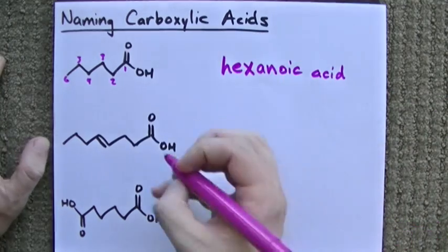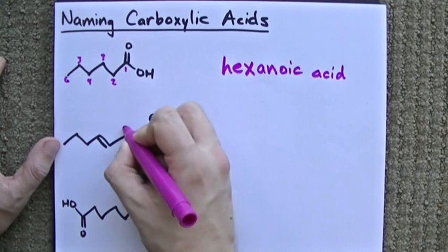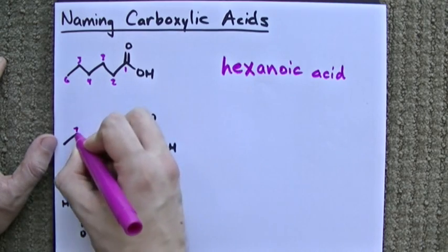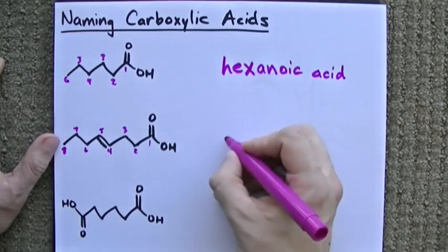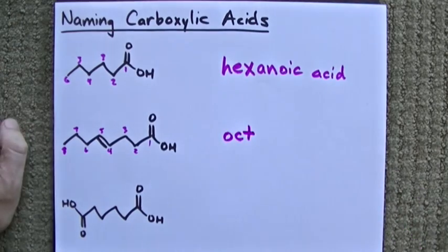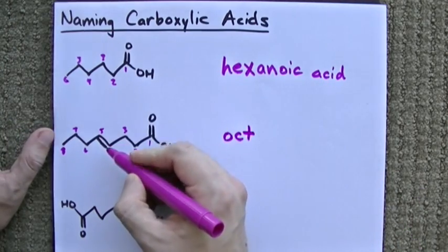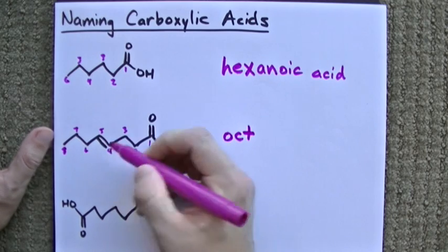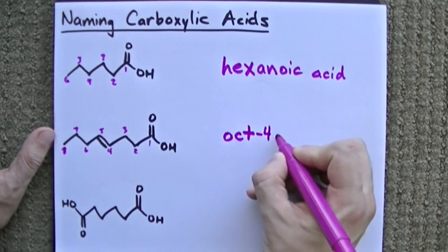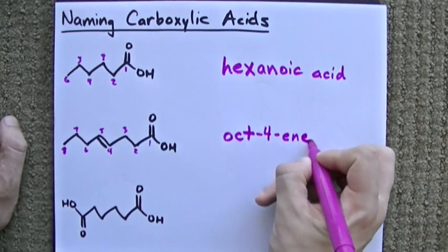Let's see what else we got here. Carbon 1, 2, 3, 4, 5, 6, 7, 8. So that means we have an oct. It looks to me like we have a double bond starting at carbon 4. So I'm just going to call this oct-4-ene.